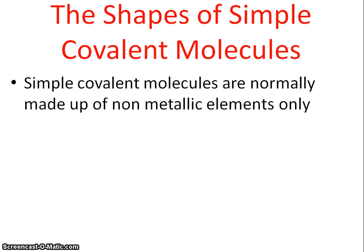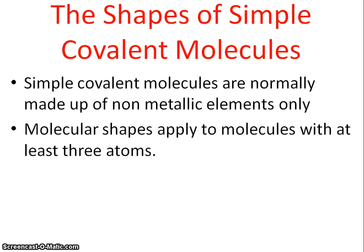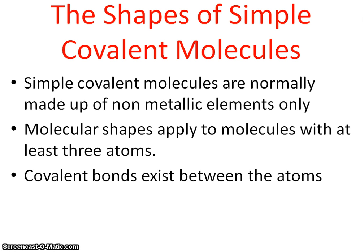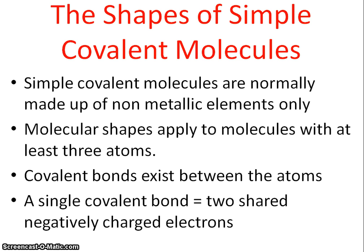Simple covalent molecules are made up of just non-metals — that's normally the case. To have a shape, you're looking at molecules with at least three atoms. Covalent bonds are of course between the atoms, and a single covalent bond involves two shared electrons.